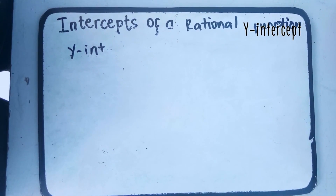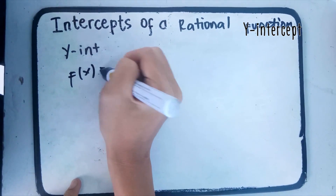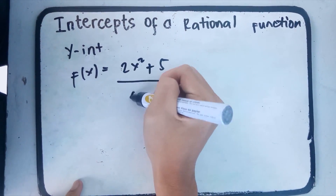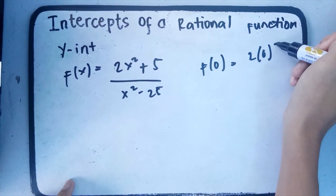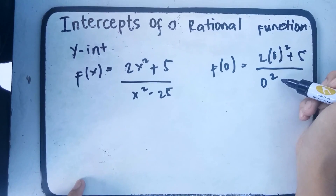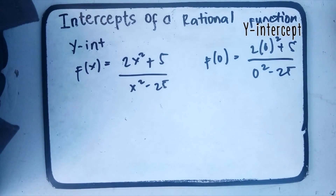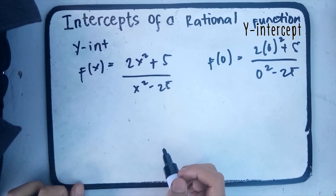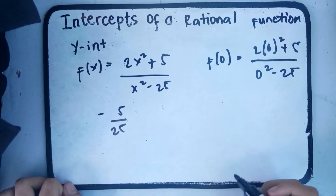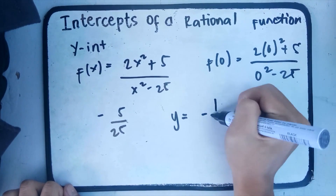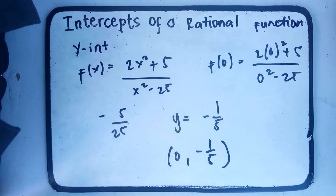The y-intercept is determined when x equals zero, or by evaluating f of zero. Substituting into f of x equals 2x squared plus 5 over x squared minus 25: f of zero equals 2 times zero squared plus 5 over zero squared minus 25, which equals 5 over negative 25, which simplifies to negative 1 over 5. Therefore, the y-intercept is the point zero, negative one-fifth.